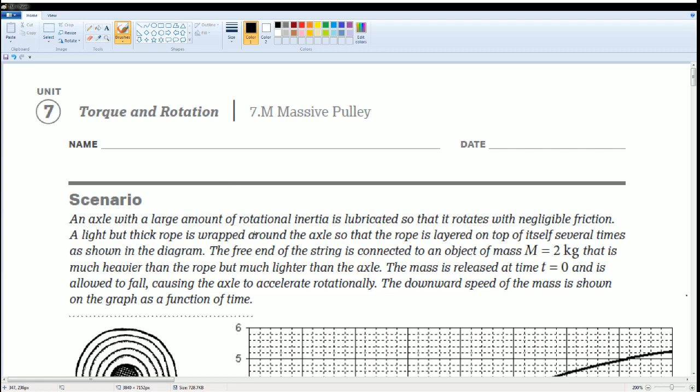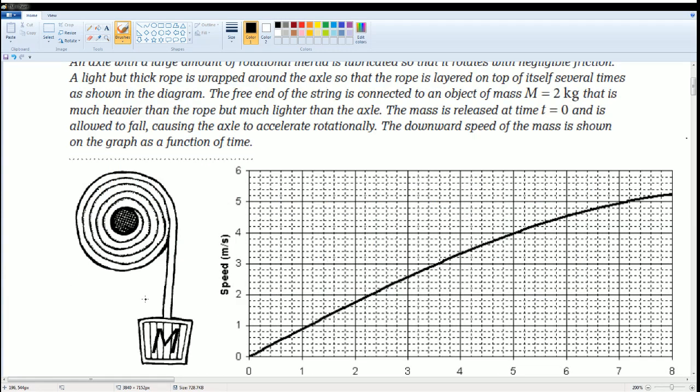Here you can read the scenario to yourself, but what is essentially happening is that this is getting unwound, and so the radius is getting smaller as it's rewinding because the mass is pulling this rope down.